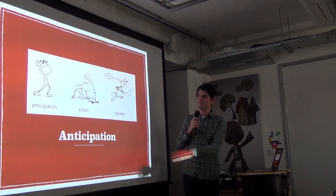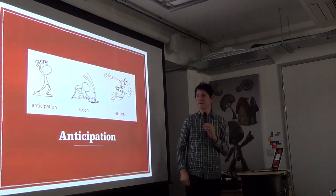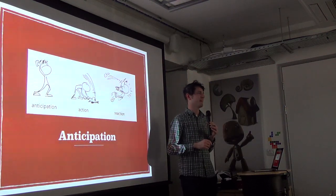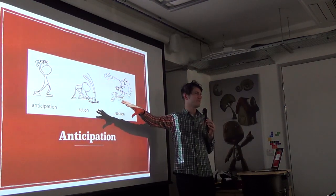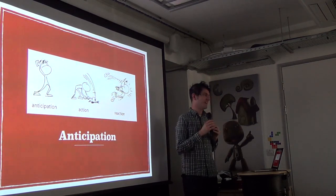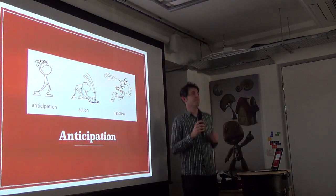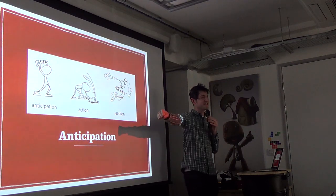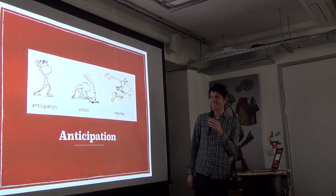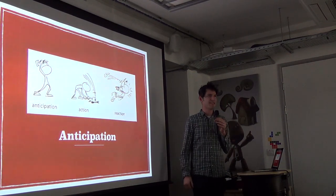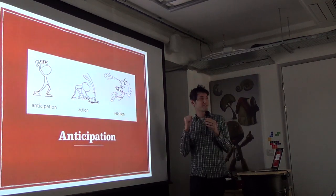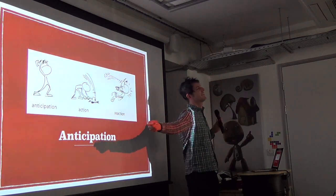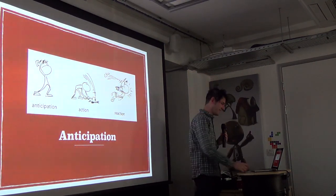Anticipation: before an animation happens, you signal that it's about to happen — before you bring a hammer down, you raise it up first. In video games this is tricky — if you press the hit button you expect the hammer to go instantly. One solution: if you have a really bouncy idle animation, you can go instantly into a punch and it feels okay, like in Street Fighter. Another solution: rather than an anticipation phase, have a big reaction afterwards — you thrust out the sword immediately but then have a big follow-through.